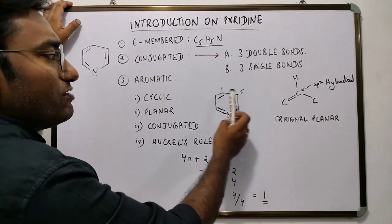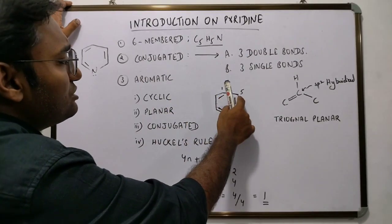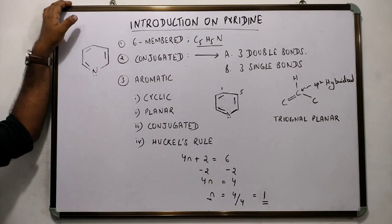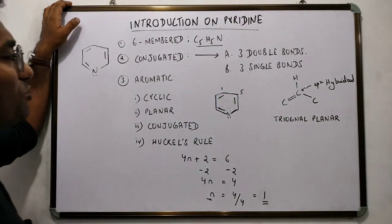In pyridine, the first carbon atom is attached to the fifth carbon atom. That means pyridine is a cyclic molecule.